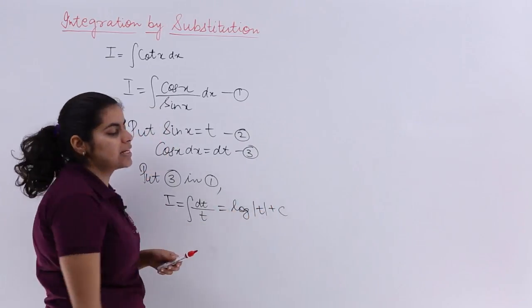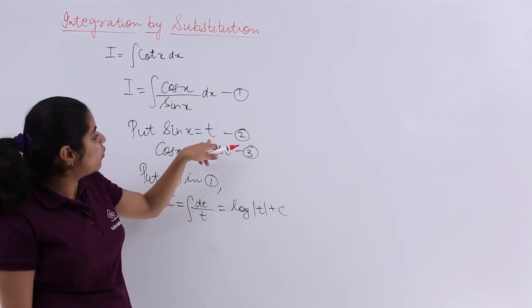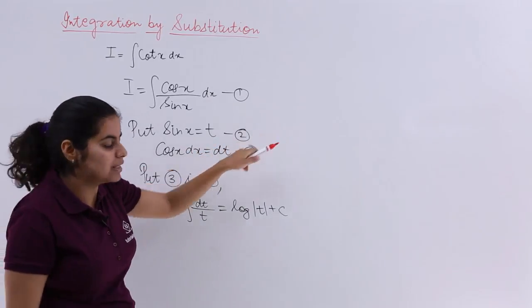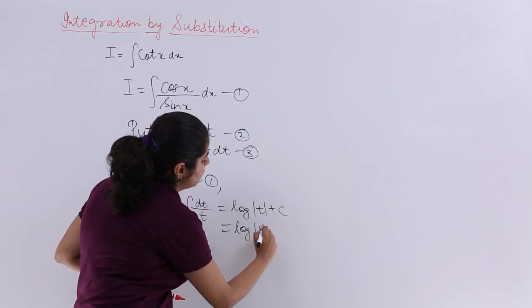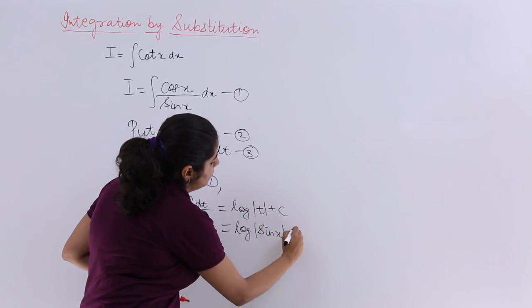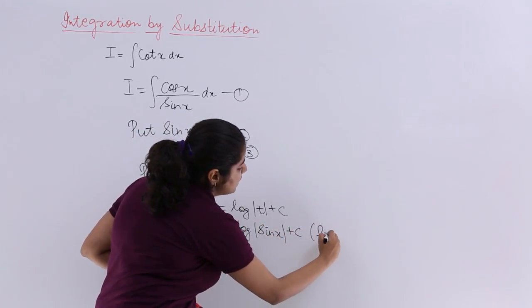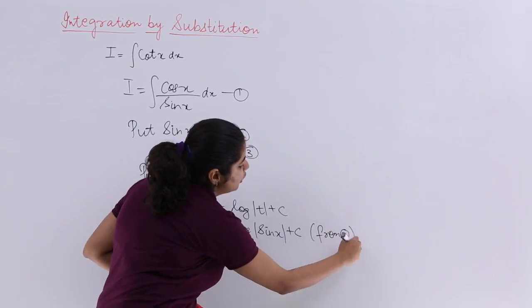And what was t? t was sin x. So I will write log sin x plus C, and that is written from equation 2 that you have to mention.